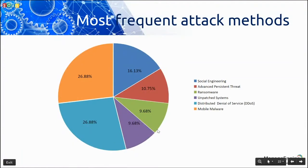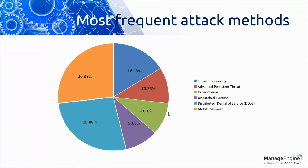Here are the most frequent attack methods being used. A majority of cyber attacks happen through mobile malware, DDoS attacks, and social engineering. About 10% of attacks are due to advanced persistent threats. Close to 9.5% of attacks are due to unpatched systems and ransomware. Proper security measures must be in place to protect organizations from these vectors.